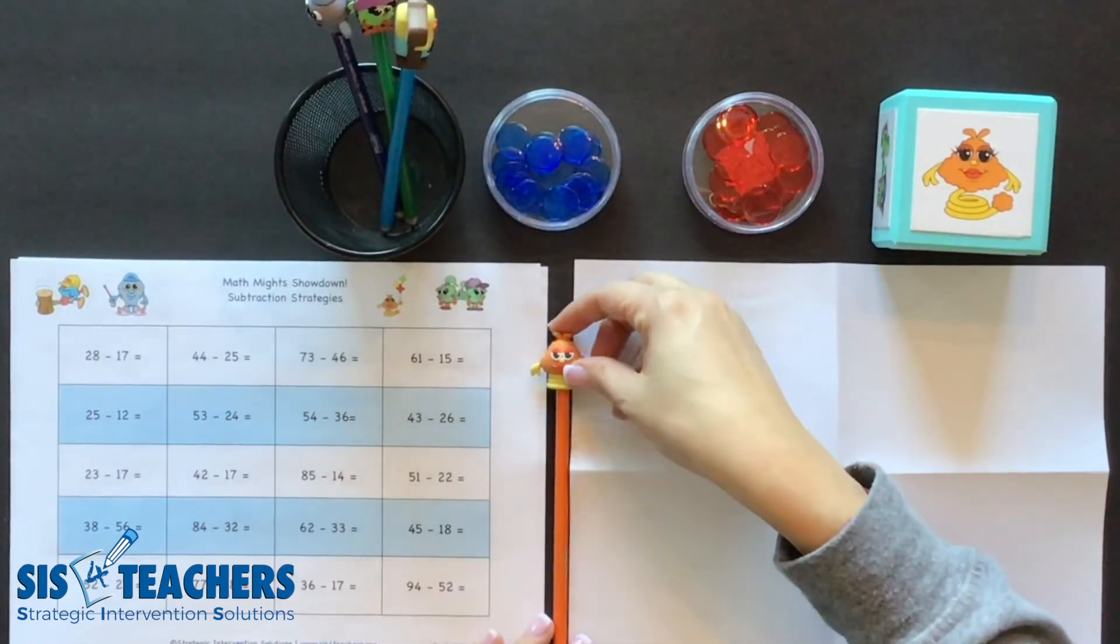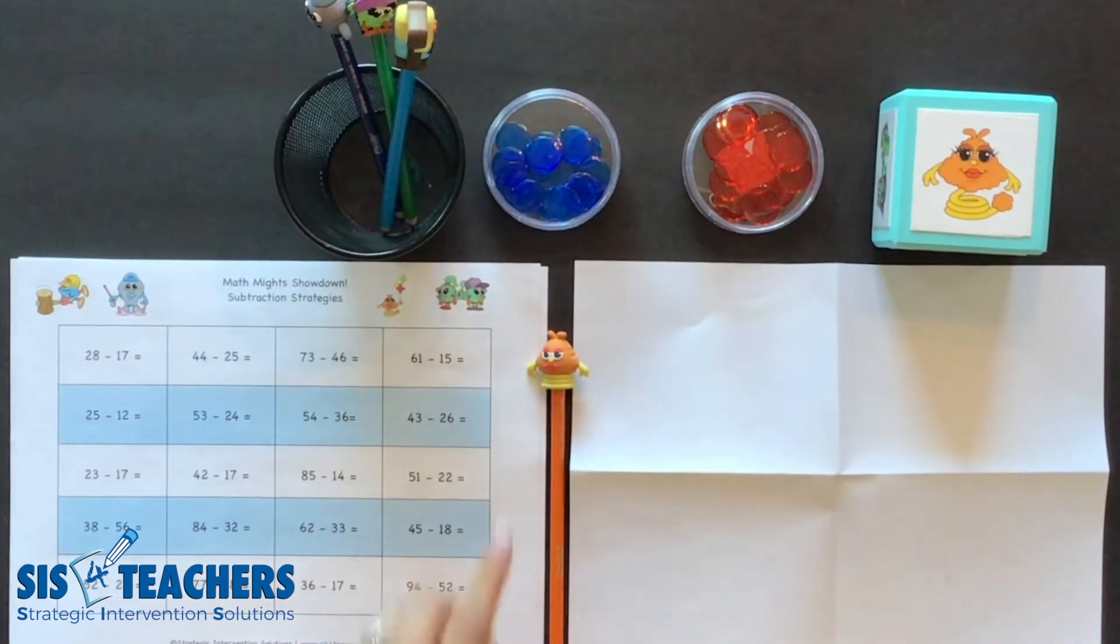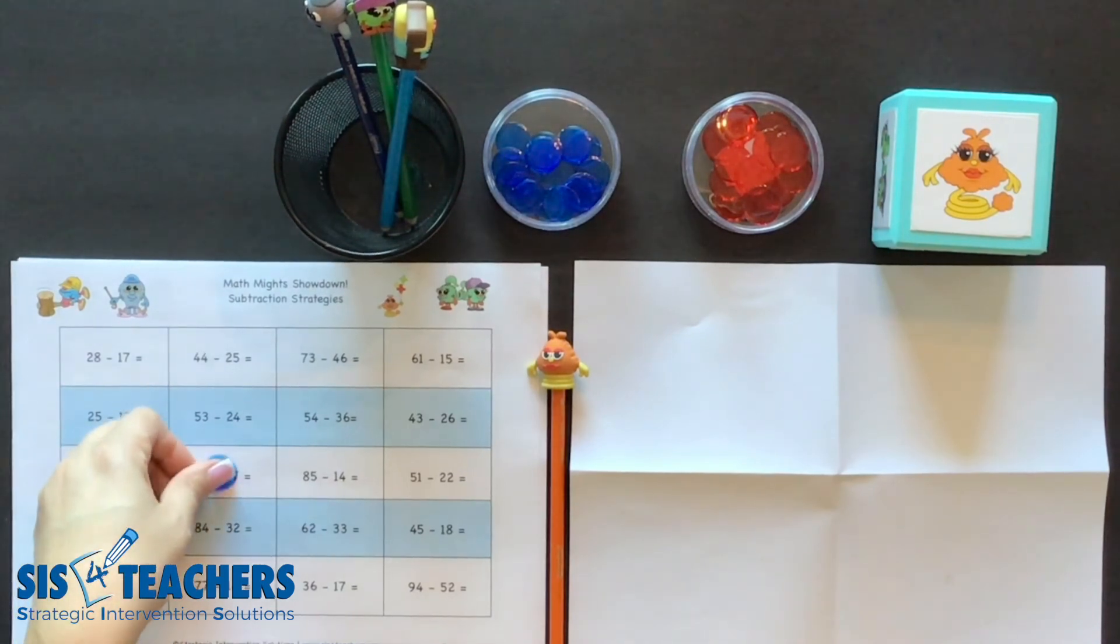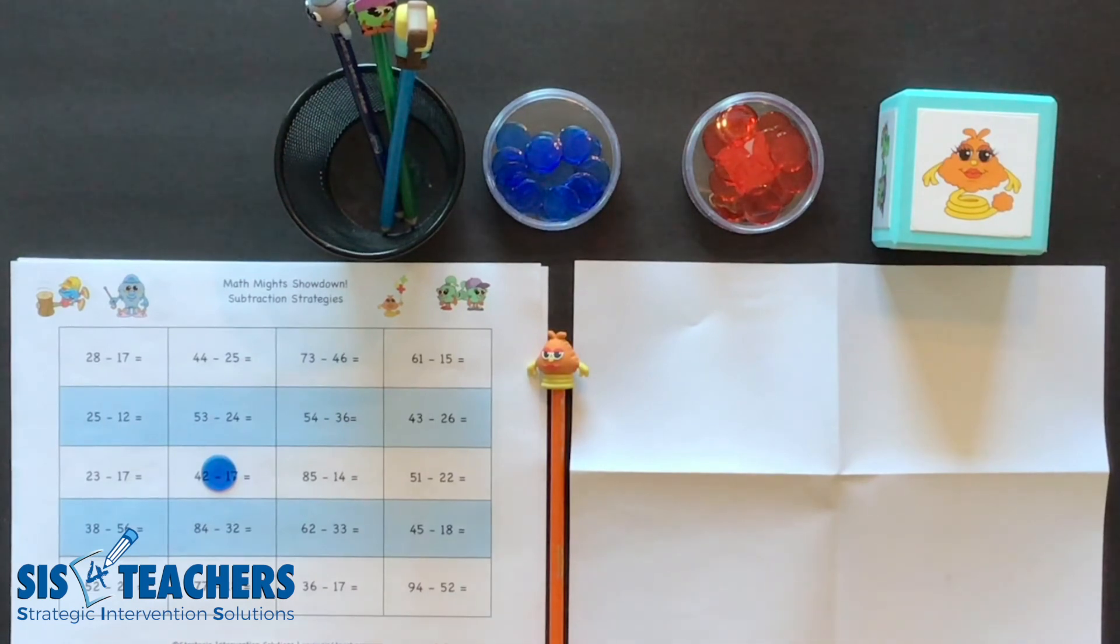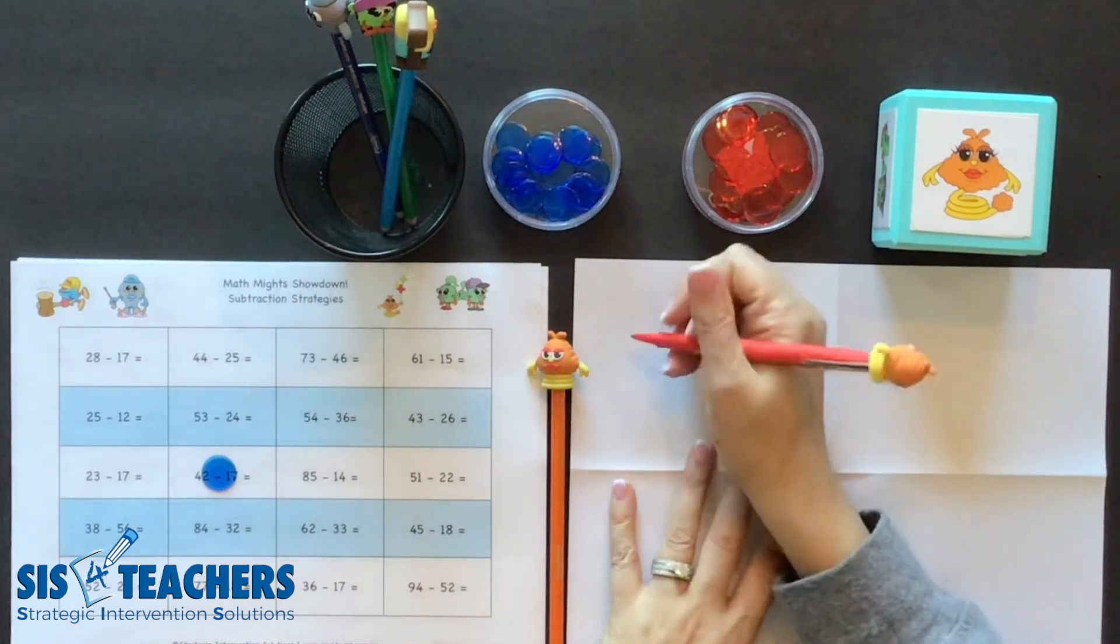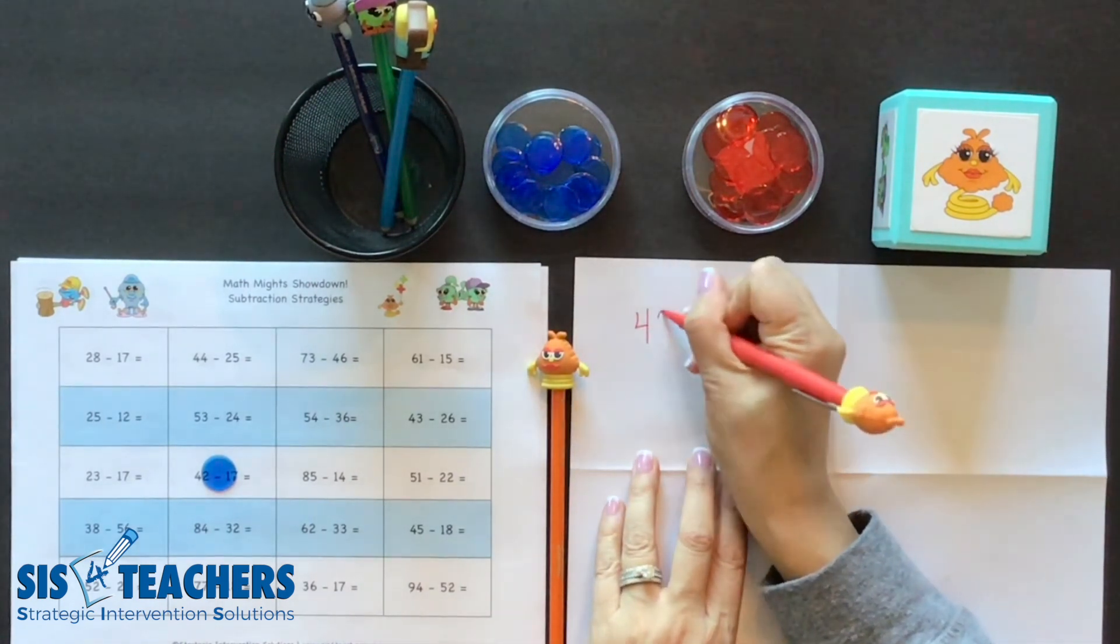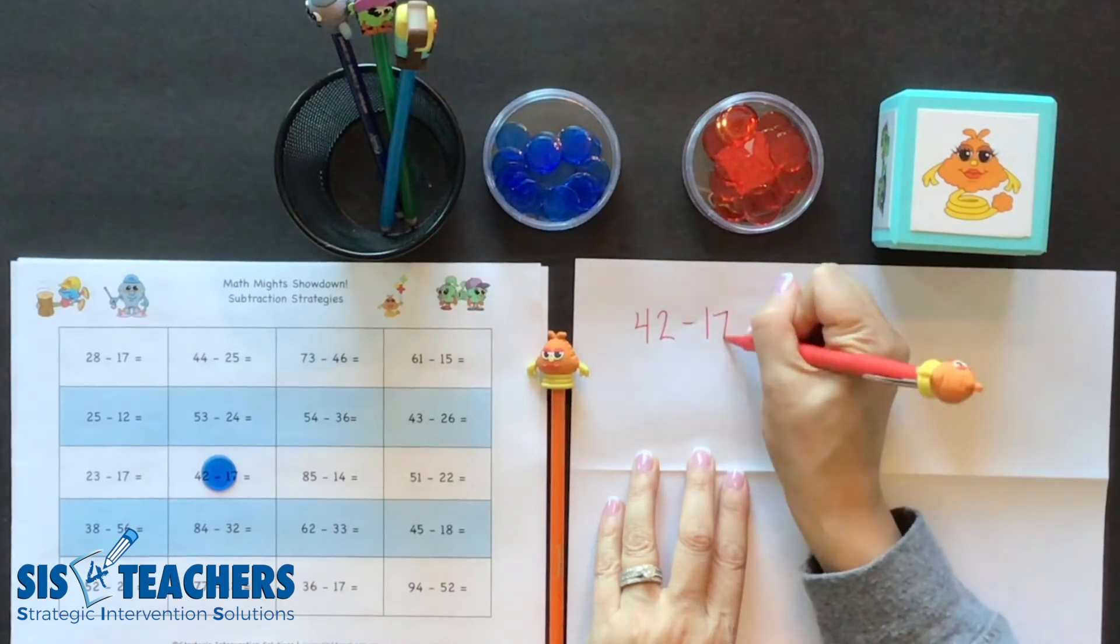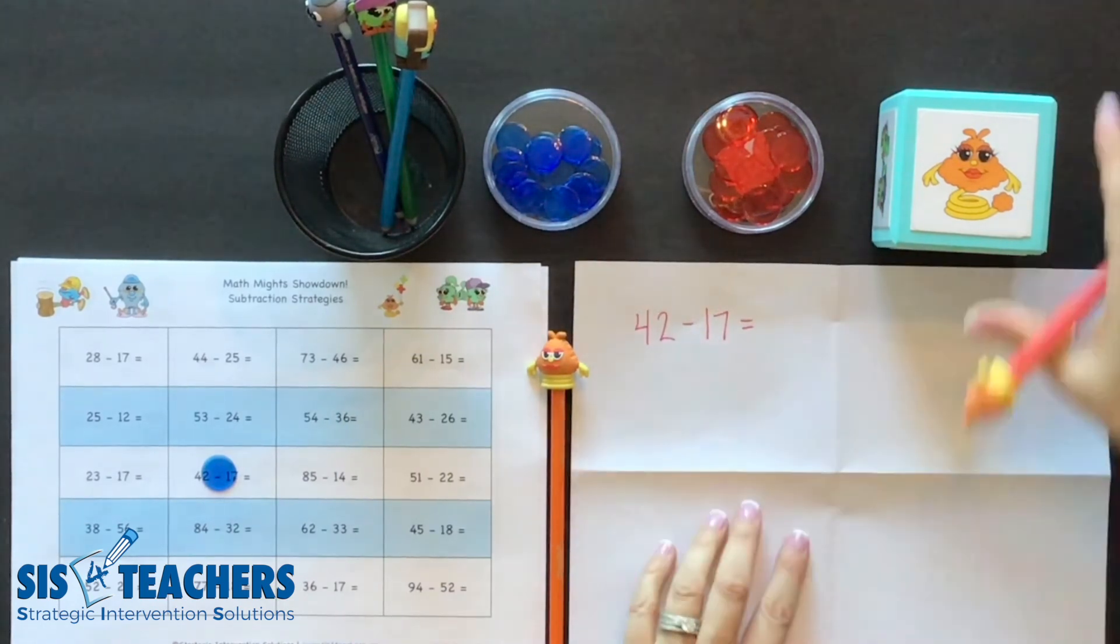I'm going to be blue and decide which one of these problems might lend itself to Springling's strategy. Because I have Springling with the pencil toppers, I'm going to pull out my Springling pencil that I'll use to solve the problem. I'm going to start off looking at where I could go with Springling, with 42 minus 17. I'm going to use a marker today so you can see it a little bit better. I'm going to write my problem first, 42 minus 17.